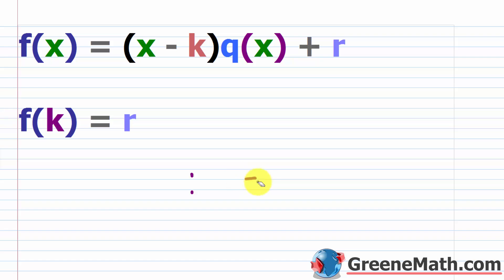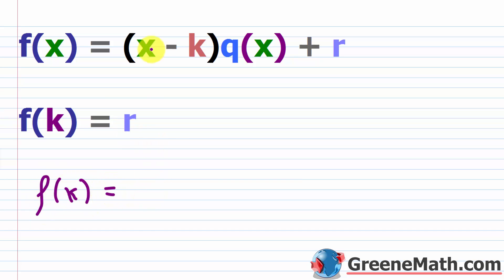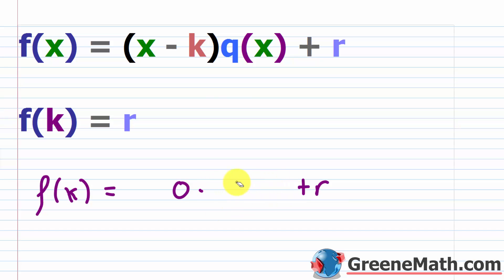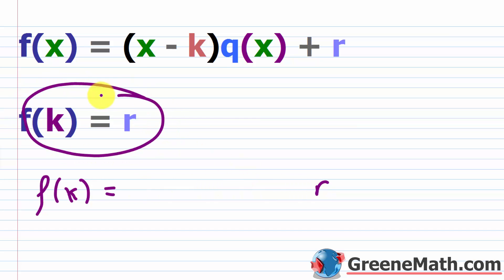The reason this format is important is that it makes the remainder theorem crystal clear. If we evaluate a polynomial function at some number k — so f of k — the result is r. The reason: f of k equals (k minus k) times q of k plus r. Well, k minus k is zero, so zero times whatever is zero, and zero plus r is just r. So f of k equals r — that's the remainder theorem.